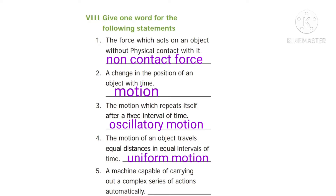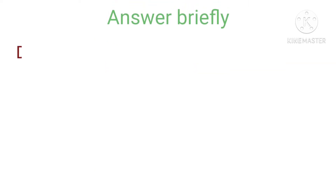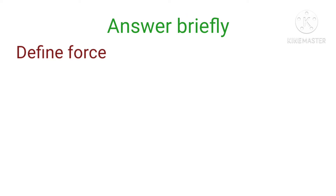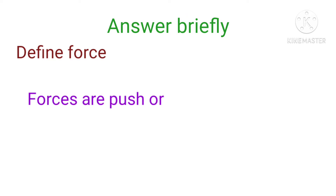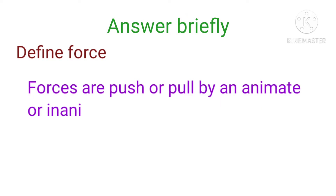Fifth one: a machine capable of carrying out a complex series of actions automatically. Answer: robot. Answer briefly — first question: define force. Forces are push or pull by an animate or inanimate agency.